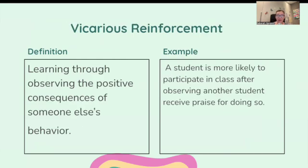Vicarious reinforcement. This is learning through observing the positive consequences of someone else's behavior. So for example, a student is more likely to participate in class after observing another student receive praise for doing so.